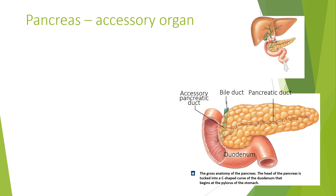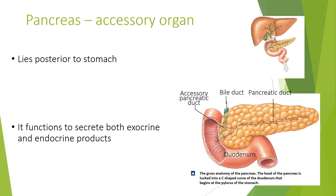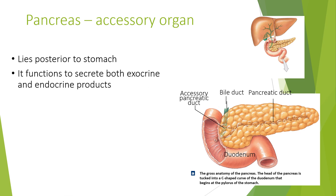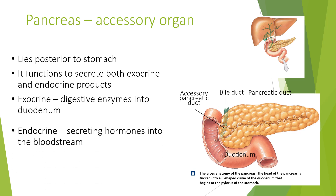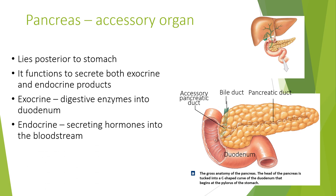An endocrine gland secretes its products — for example, hormones — directly into the blood. An exocrine gland secretes its products — for example, enzymes — into ducts that lead to target tissue. The pancreas is an accessory organ which lies posterior to the stomach. It functions to secrete both exocrine and endocrine products: exocrine digestive enzymes into the duodenum, and endocrine hormones into the bloodstream.